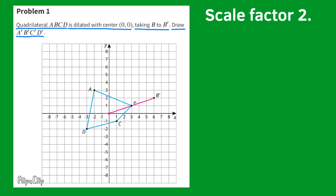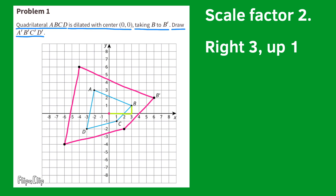Now that I know it's a scale factor of 2, I can repeat this process extending from the center point through the other points using a scale factor of 2 and plotting the points for the dilation. Connect the points and you'll see the dilation A', B', C', and D'. Here's an accurate method: start at the center point and count over 3 and up 1 to reach B. Since it's a scale factor of 2, start at B and move 3 to the right and go up 1 to place your point for B'. Repeat that process for the other points.